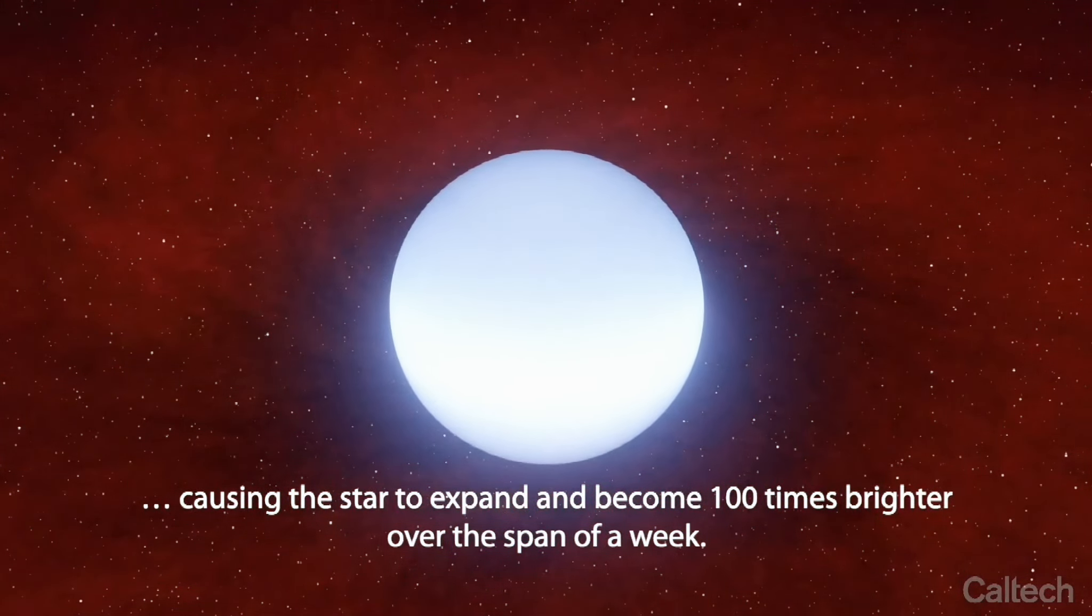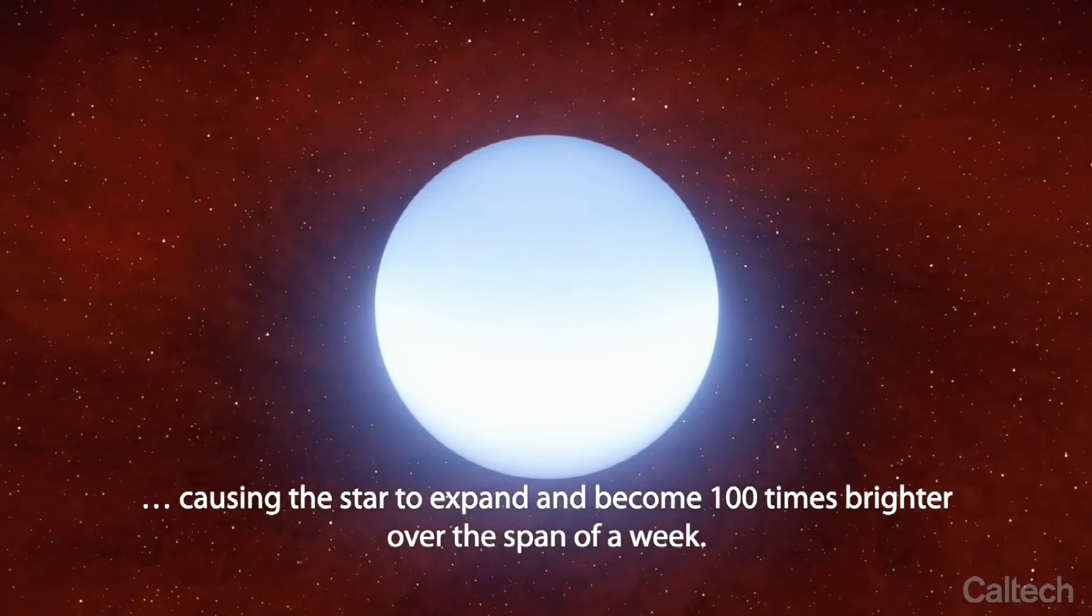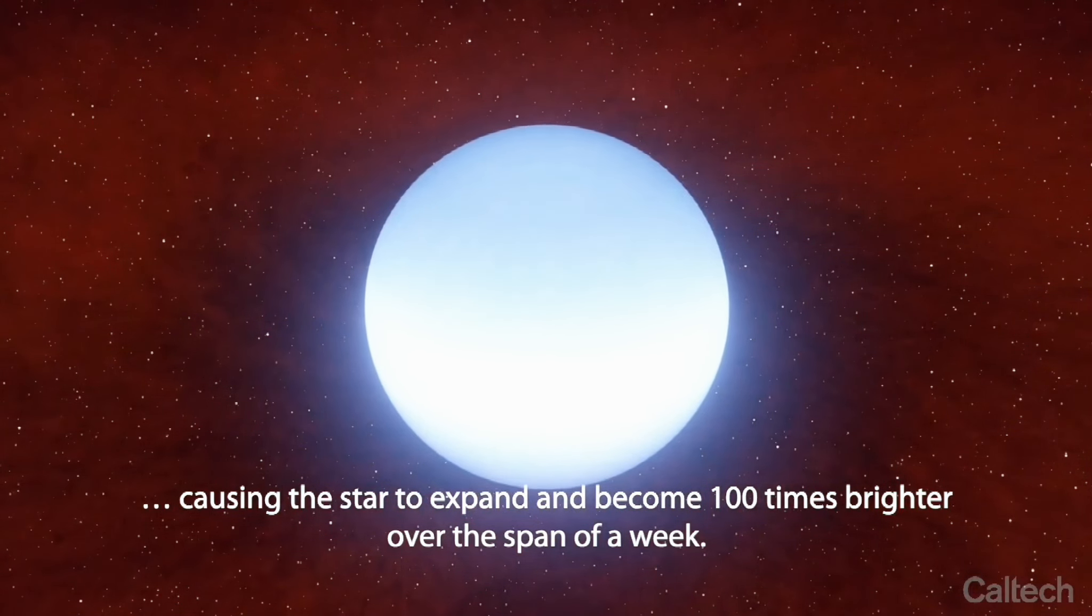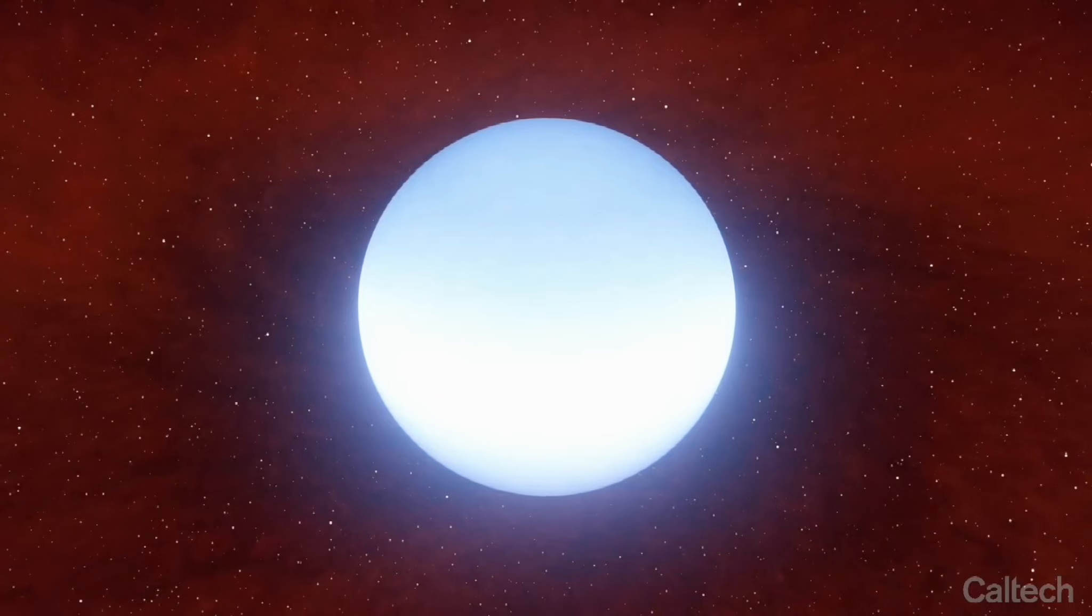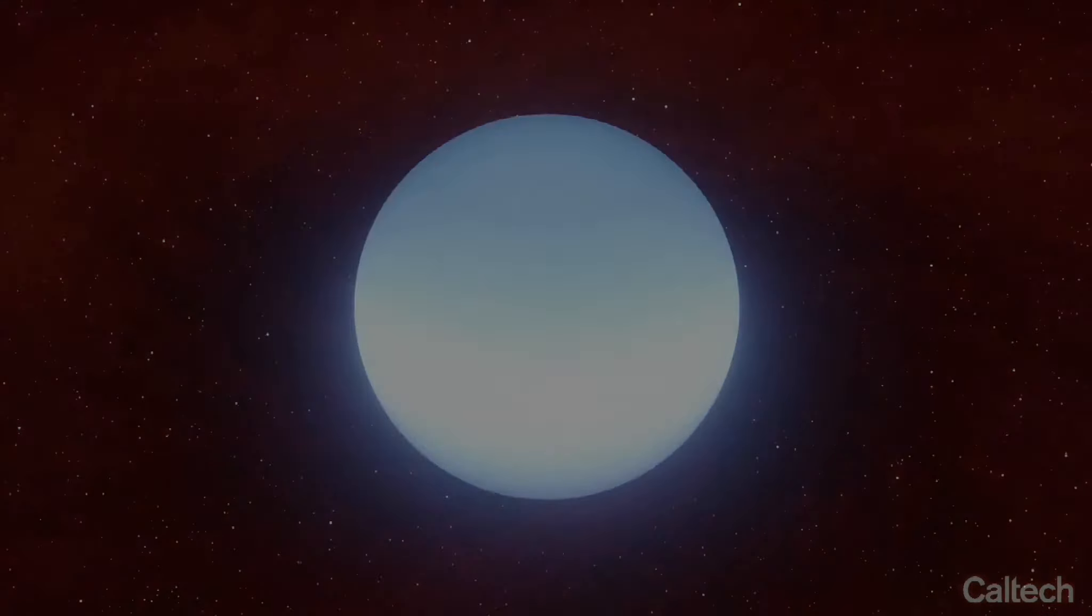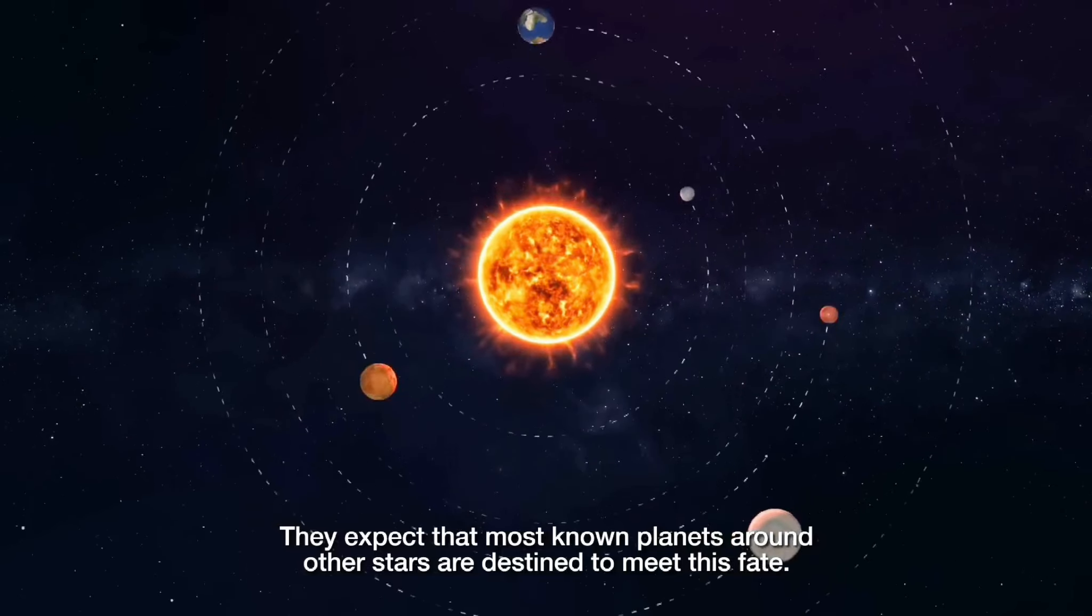The planet could be anywhere from between a few to maybe ten times Jupiter's mass. The researchers took all the observations they had from various telescopes and created astrophysical simulations that basically let them recreate what must have occurred.